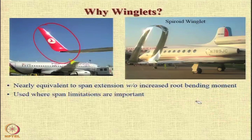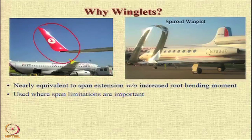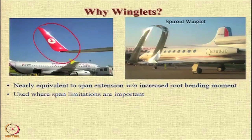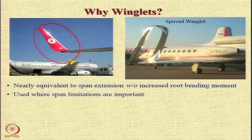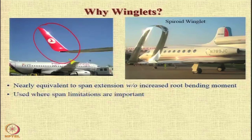When you install winglets, the performance of the wing is nearly equivalent to the span extension without the increased root bending moment. One can always go for span extension, but when you extend the span, you get a higher aspect ratio. The wing tip vortex is weakened, but you also get a larger wing root bending moment, and hence you have to design the aircraft wing to carry that larger moment, so the wing will become a little bit heavier. By providing a winglet, you provide a span extension effect without creating this additional root bending moment.